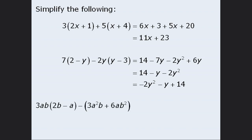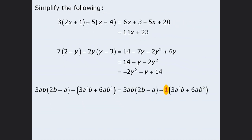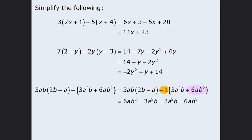One last question. To begin, I want to rewrite this expression by adding a negative 1 in front of the second set of parentheses to show that subtracting this expression is the same as multiplying it by negative 1. Now we can proceed as usual. First, we'll multiply 3ab by 2b to get 6ab squared. Then we'll multiply 3ab by negative a to get minus 3a squared b. From here, we'll multiply negative 1 by 3a squared b to get minus 3a squared b. And finally, we'll multiply negative 1 by positive 6ab squared to get minus 6ab squared.